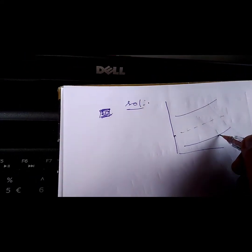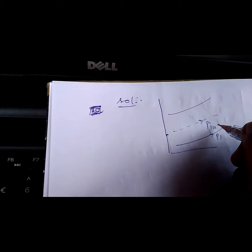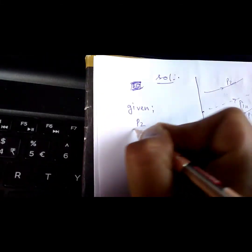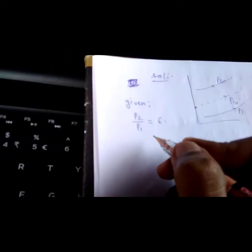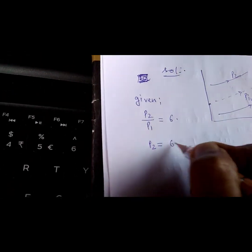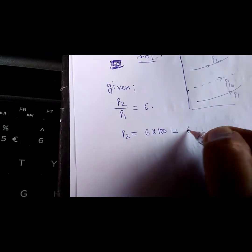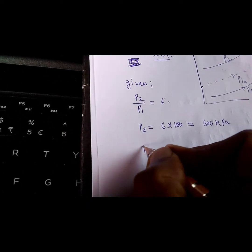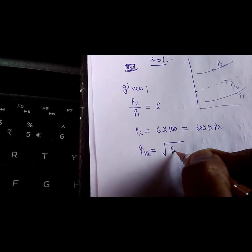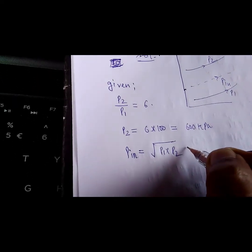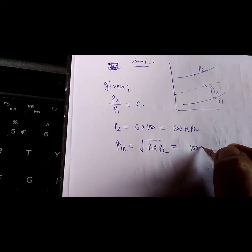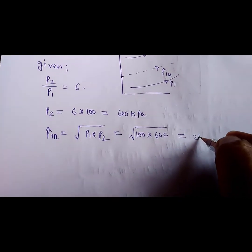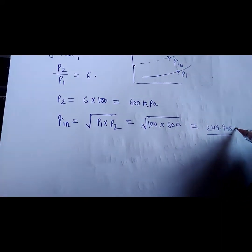I have drawn three pressure lines: P1, the intermediate pressure P_int, and P2. The overall pressure ratio P2/P1 = 6, and P1 = 100 kilo Pascal, so P2 = 6 × 100 = 600 kilo Pascal. For minimum compressor work, the intercooling pressure equals the geometric mean: P_int = √(P1 × P2) = √(100 × 600) = 244.95 kilo Pascal.